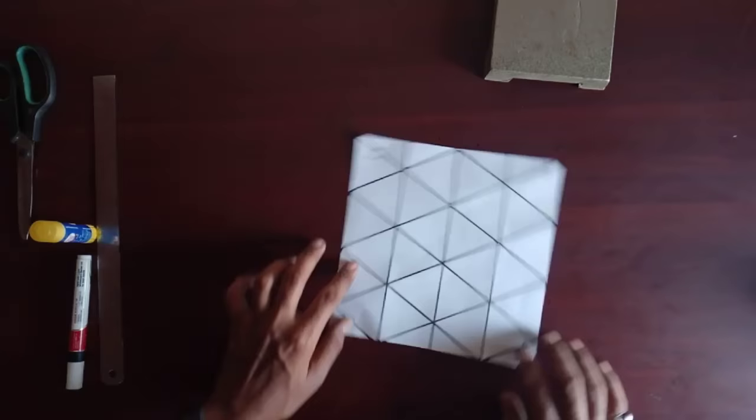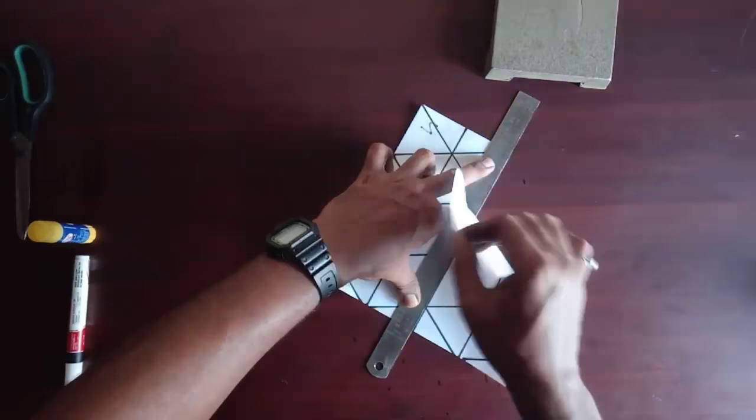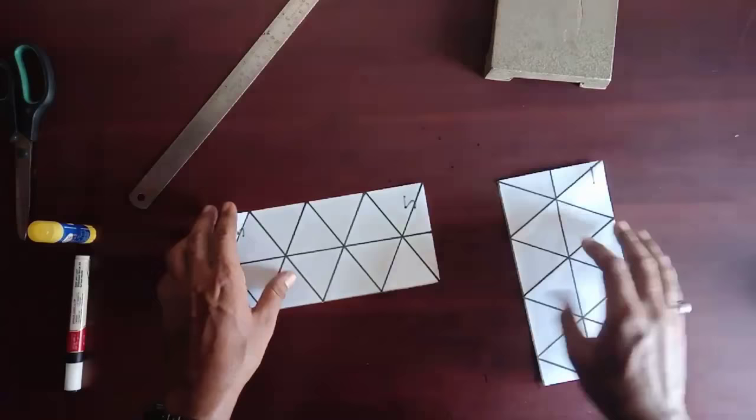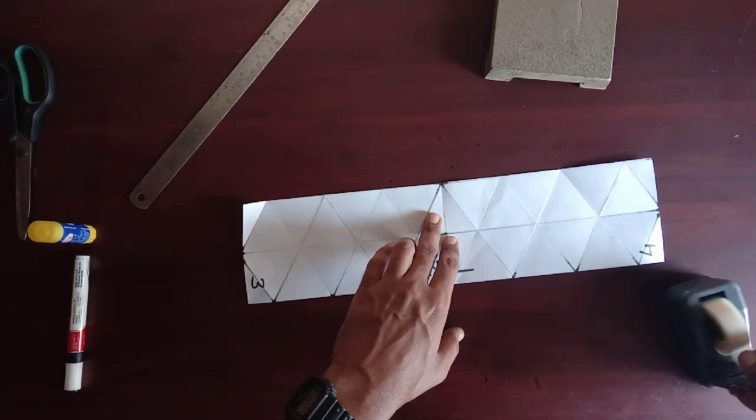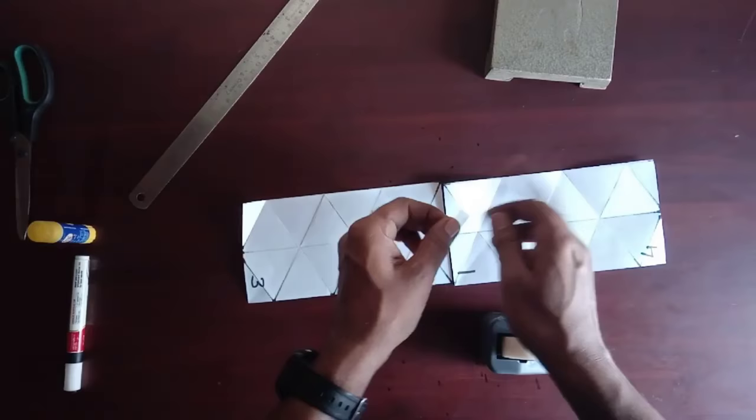Now divide the sheet into two parts from the midline. Join both parts together and make a long strip. Join them very carefully and cleanly using tape.